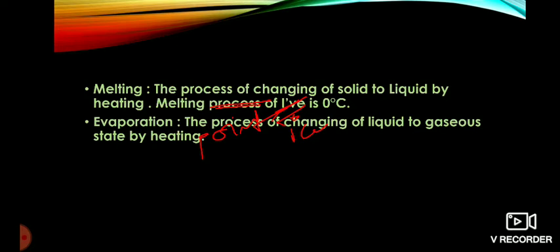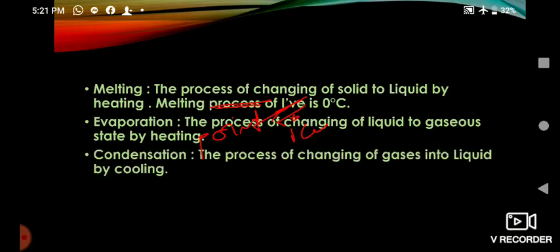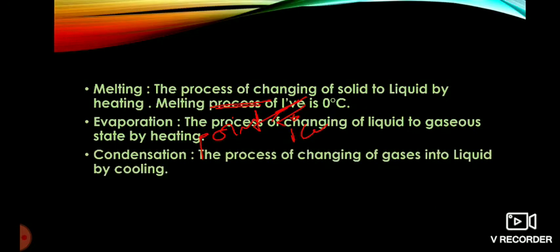The boiling point of water is 100 degrees Celsius. Next, condensation — the process of changing of gas into liquid state by cooling is called condensation. From water bodies like ponds and rivers, water evaporates and goes above, where water vapor condenses and forms clouds. Cloud is formed by the condensation process where vapor condenses by cooling and changes into cloud.